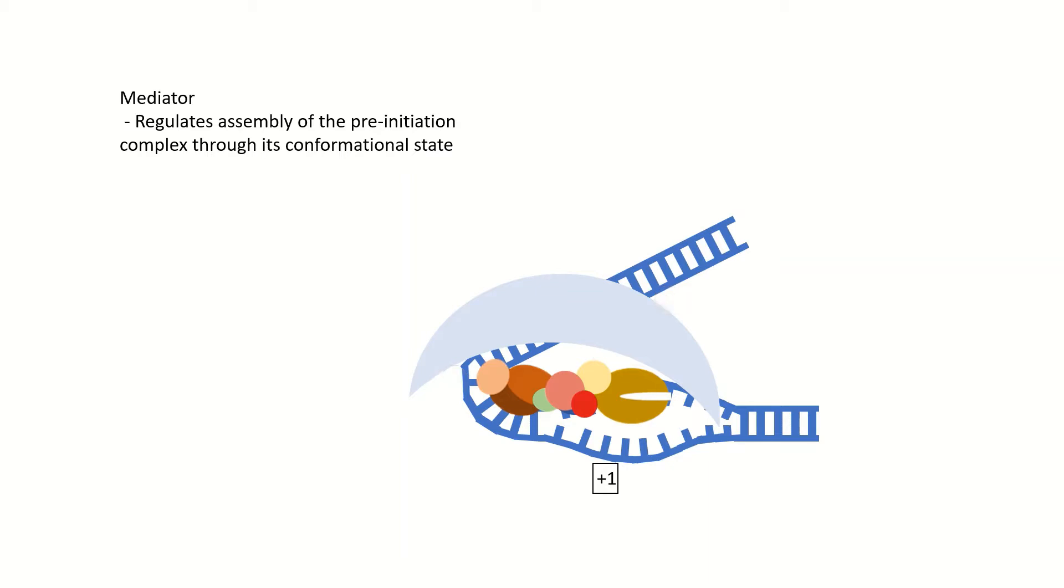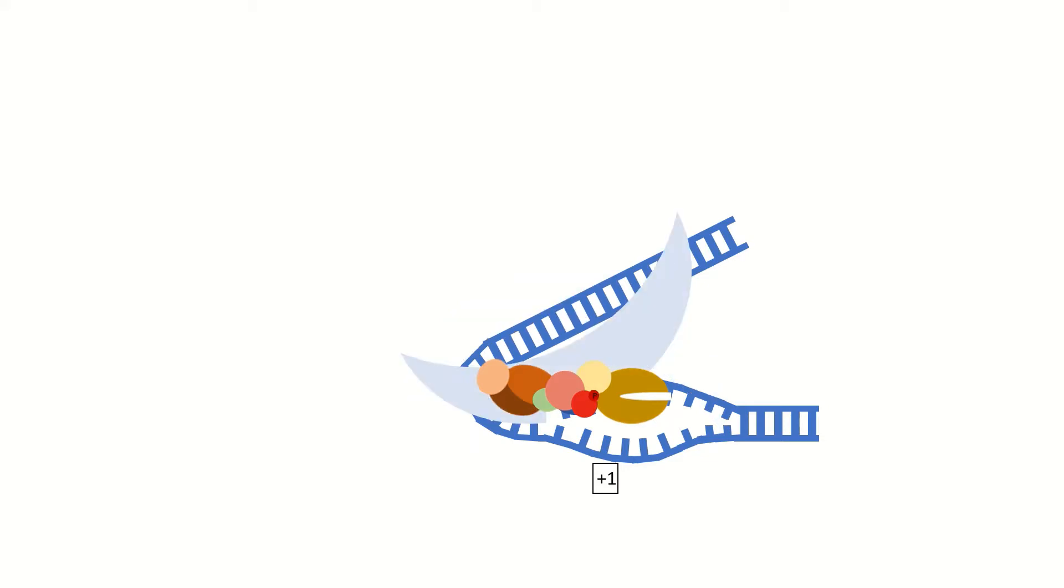After the mediator associates with the pre-initiation complex, TF2H phosphorylates the C-terminal domain of RNAP2, causing a conformational change in the mediator and transcription begins. RNAP2 clears the promoter together with TF2F, which plays a role in reducing pausing and protecting against TF2S cleavage during transcription. TF2B also dissociates.